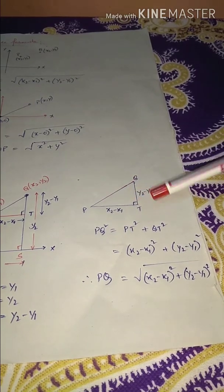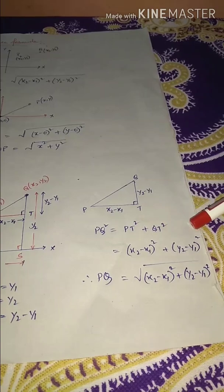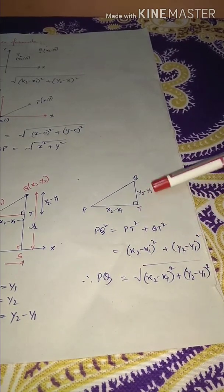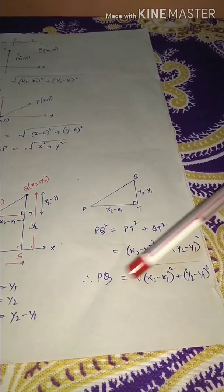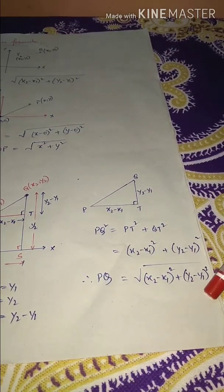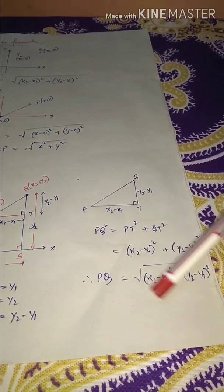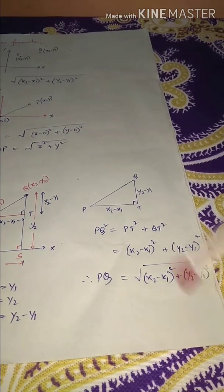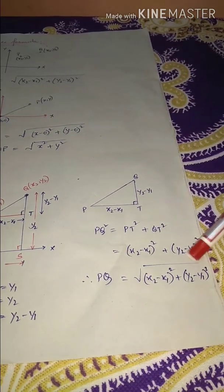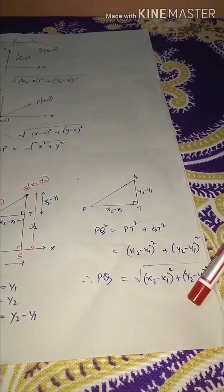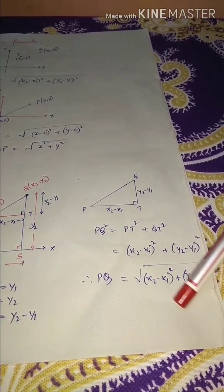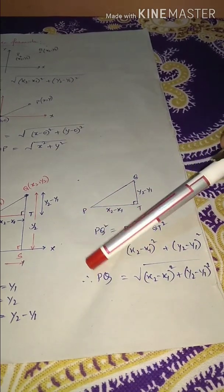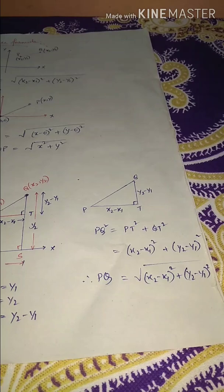Substituting into the Pythagorean theorem: PQ² = (X₂ − X₁)² + (Y₂ − Y₁)². Taking the square root gives PQ = √[(X₂ − X₁)² + (Y₂ − Y₁)²]. We take only the positive root because distance is always positive. This completes the derivation of the distance formula, which we can now directly apply.